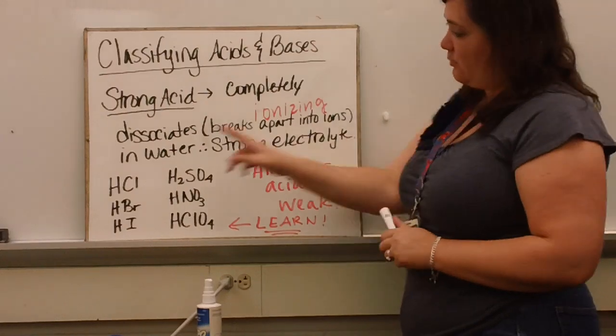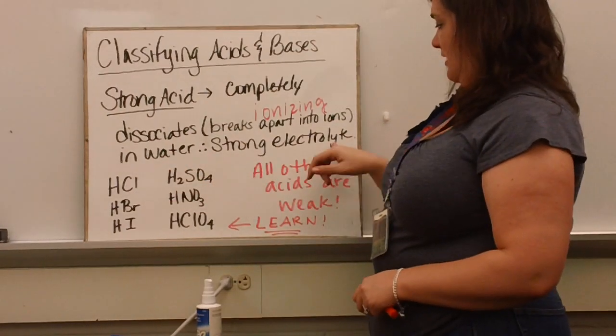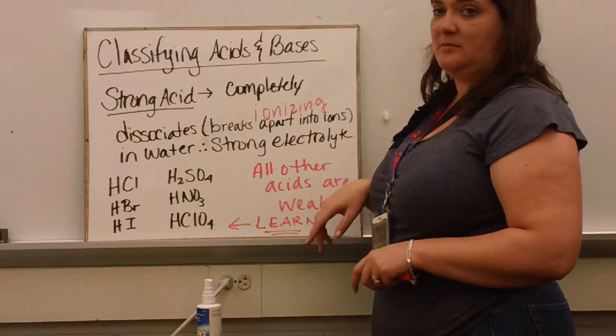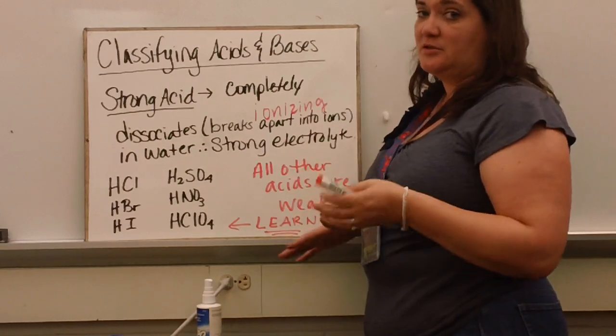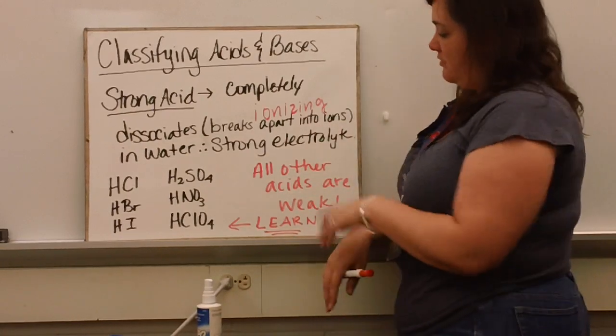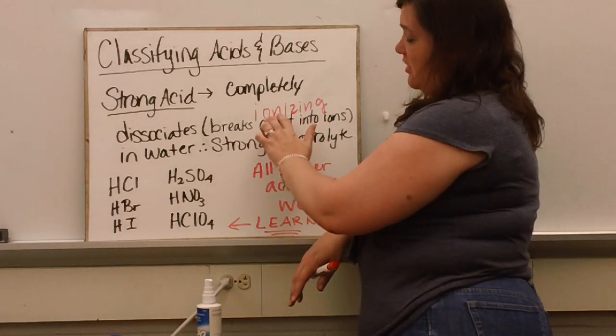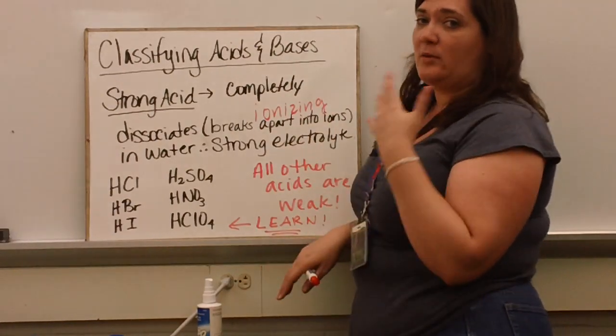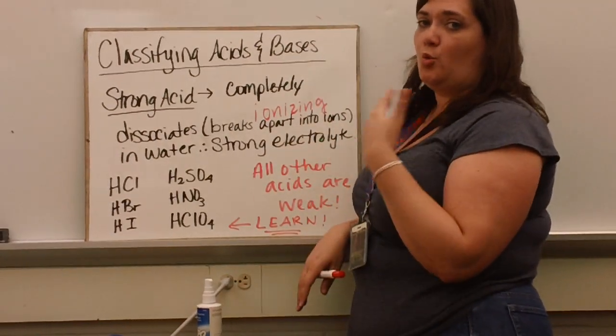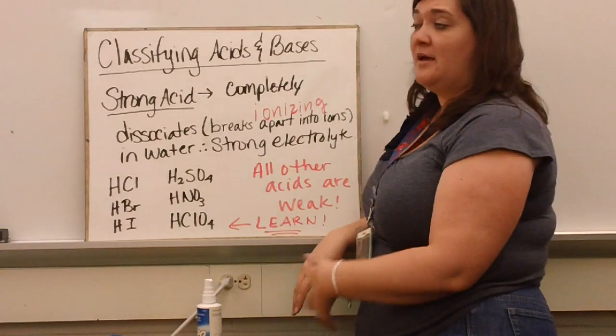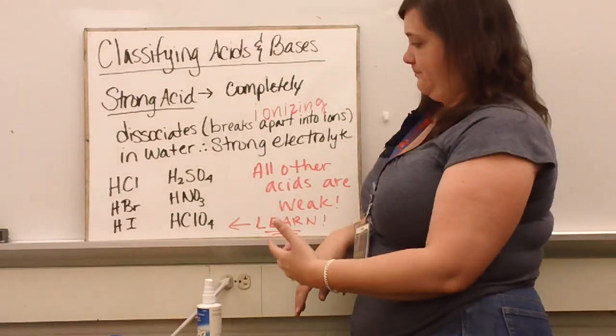And they do that when we put them in water. Therefore, they are strong electrolytes. Remember the last unit we talked about electrolytes being solutions which conduct electricity. The reason they conduct electricity is because all of their ions are freely moving. And when we have free-moving ions, we have free-moving negative charges. Therefore, we have electricity that can flow.